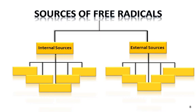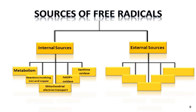Sources of free radicals. Free radical formation in the body occurs by several mechanisms involving both internal and external sources. Internal sources include metabolic reactions involving iron and copper, xanthine oxidase, NADPH oxidase, and mitochondrial electron transport. External sources include ozone, radiation, UV rays, smoke, alcohol, and drugs.